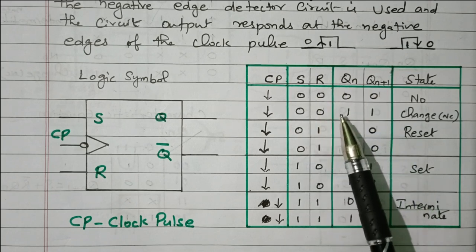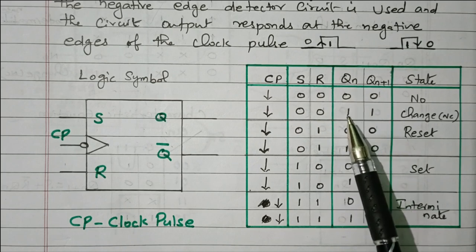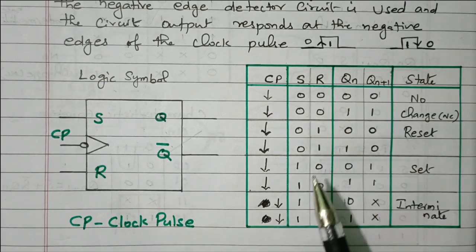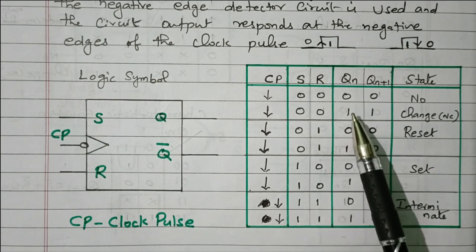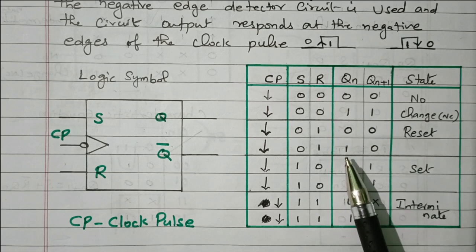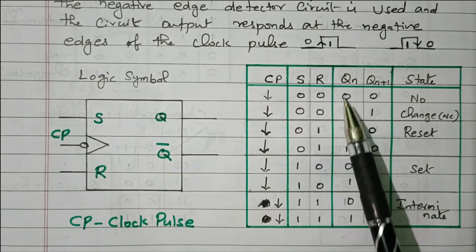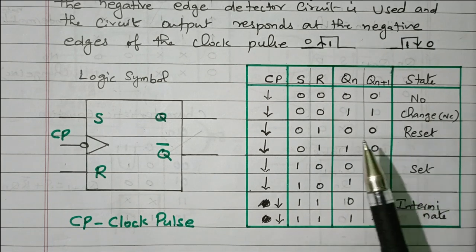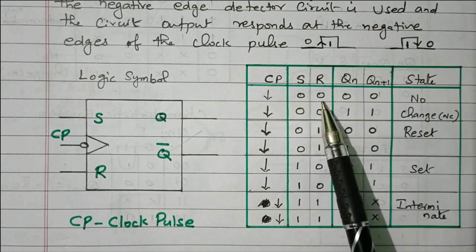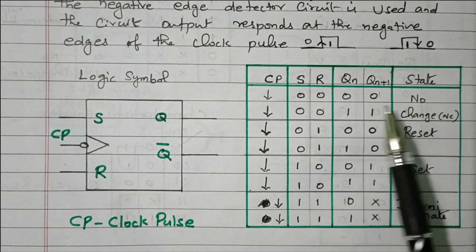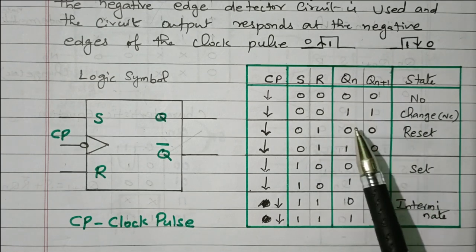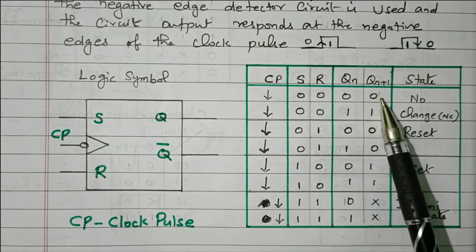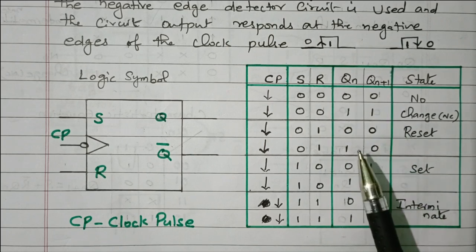When S=0 and R=0, there is no change. If the present state Qn is 0, the next state Qn+1 is also 0. If the present state is 1, the next state remains 1. Whatever the present state is, the same thing is reflected as the next state — no change occurs.